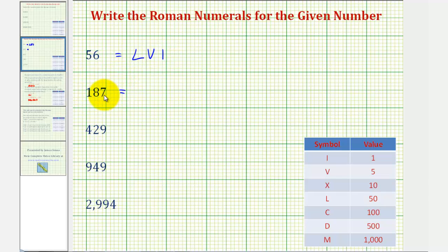For 187, we can use a c for 100. Now for 80, we can use an l followed by three x's. So there's 50 plus 10 plus 10 plus 10, or 80.